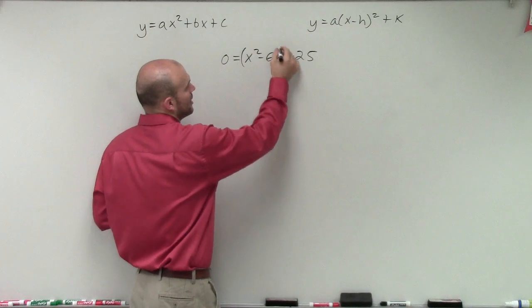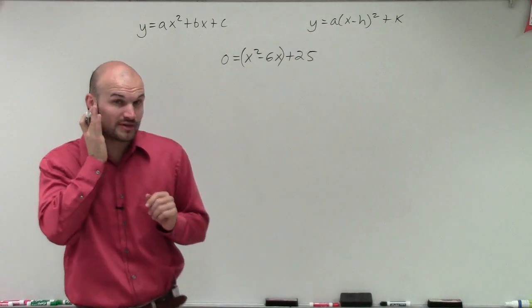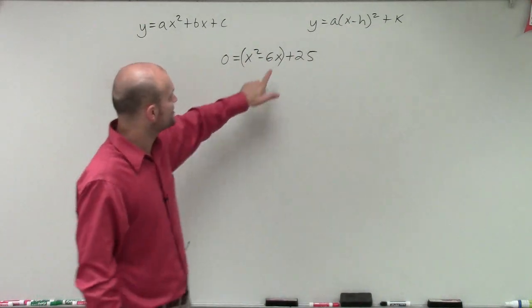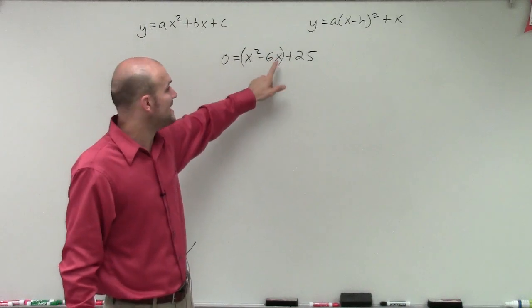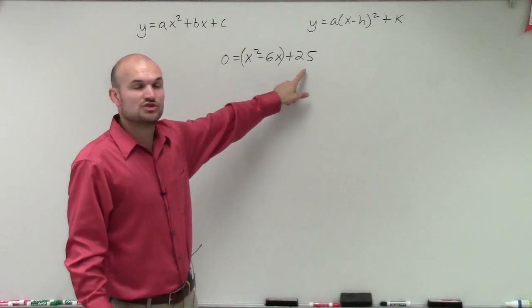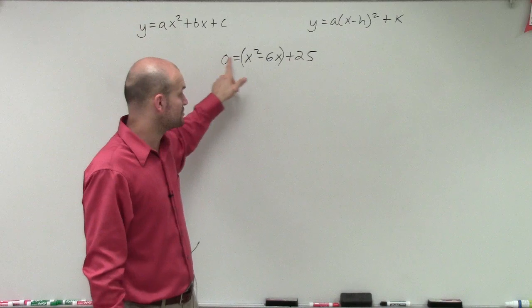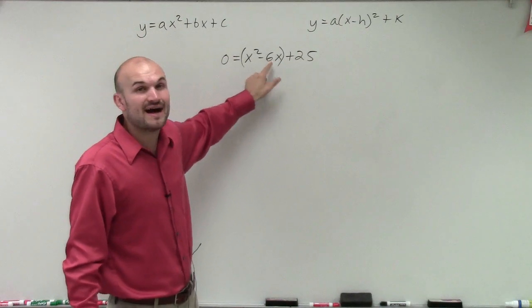And what I mean by that is we're going to take our quadratic and our linear term. We're going to put them in parentheses. And what I want to do is find the third value that's going to make this a perfect square trinomial. 25 does not make this a perfect square trinomial. I need to find the value.